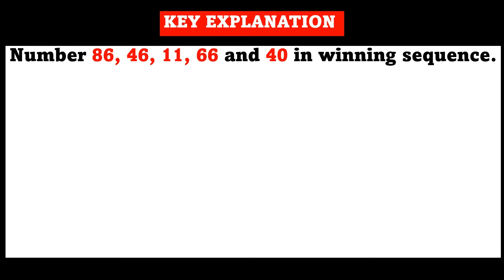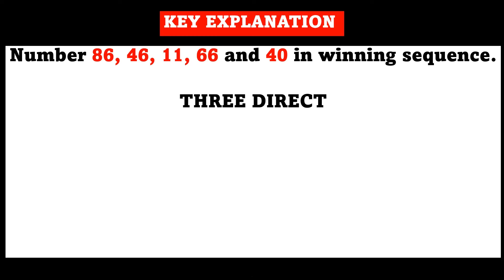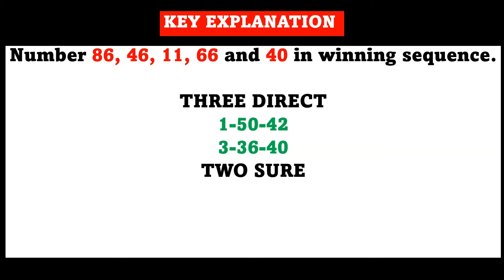When 86-46-11-66-40 drops in sequence in any of the 5/90 lottery systems, these are the particular numbers you have to invest your money in. We have three direct sets of numbers: 1, 50, 42 — played as three direct numbers and also as three numbers presentation. Another three direct set is 3, 36, and 40. We also have the two sure, which is 3 and 36.